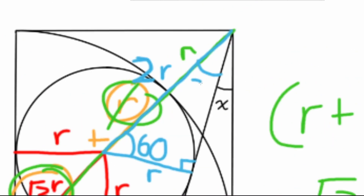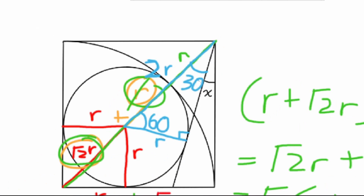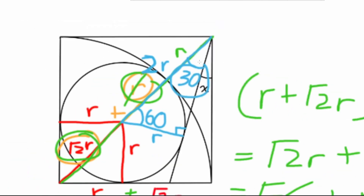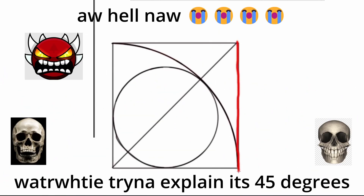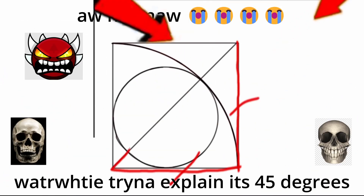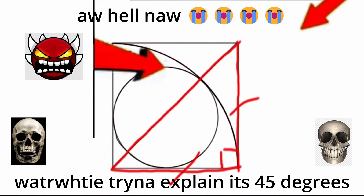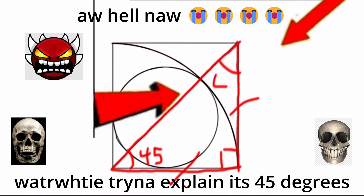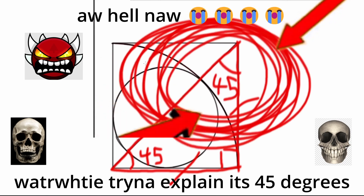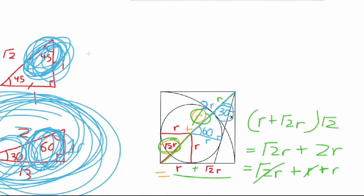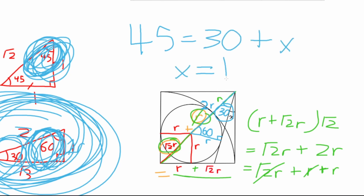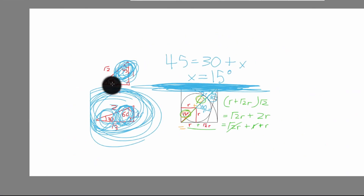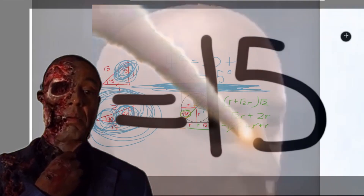Which means that the angle beside x is 30 degrees. Looking at the right angle triangle from the side of the square, we can see that the sum of x and 30 degrees is equal to 45 degrees. That means that x is equal to 15 degrees.